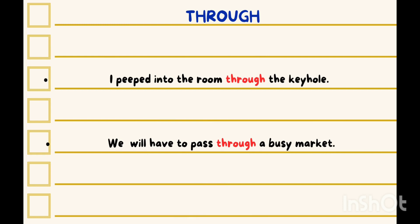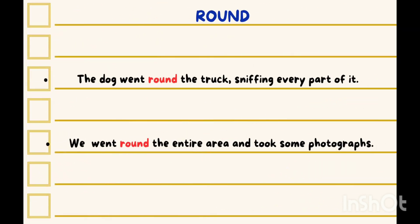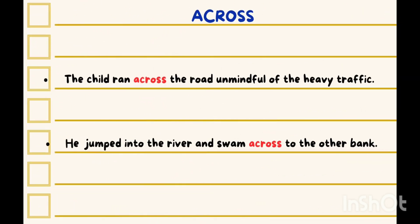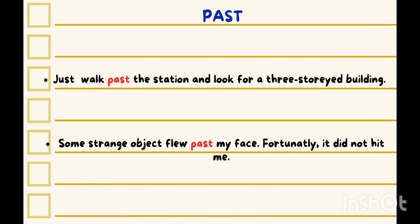Using 'round': 'The dog went round the truck, sniffing every part of it,' or 'We went round the entire area and took some photographs.' Using 'along': 'Walk along this road till the next crossing and then turn right,' or 'The snail slowly moved along the edge of the field.' Using 'across': 'The child ran across the road unmindful of the heavy traffic,' or 'He jumped into the river and swam across to the other bank.' Using 'past': 'Just walk past the station and look for a three-storied building,' or 'Some strange object flew past my face. Fortunately, it did not hit me.'